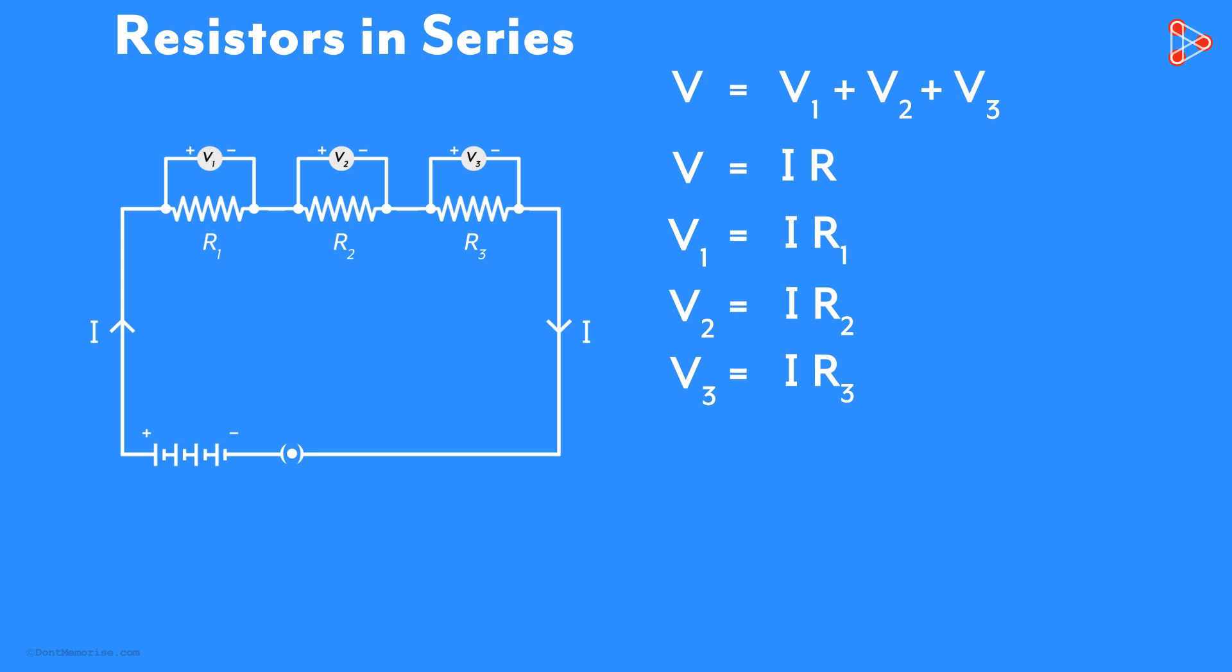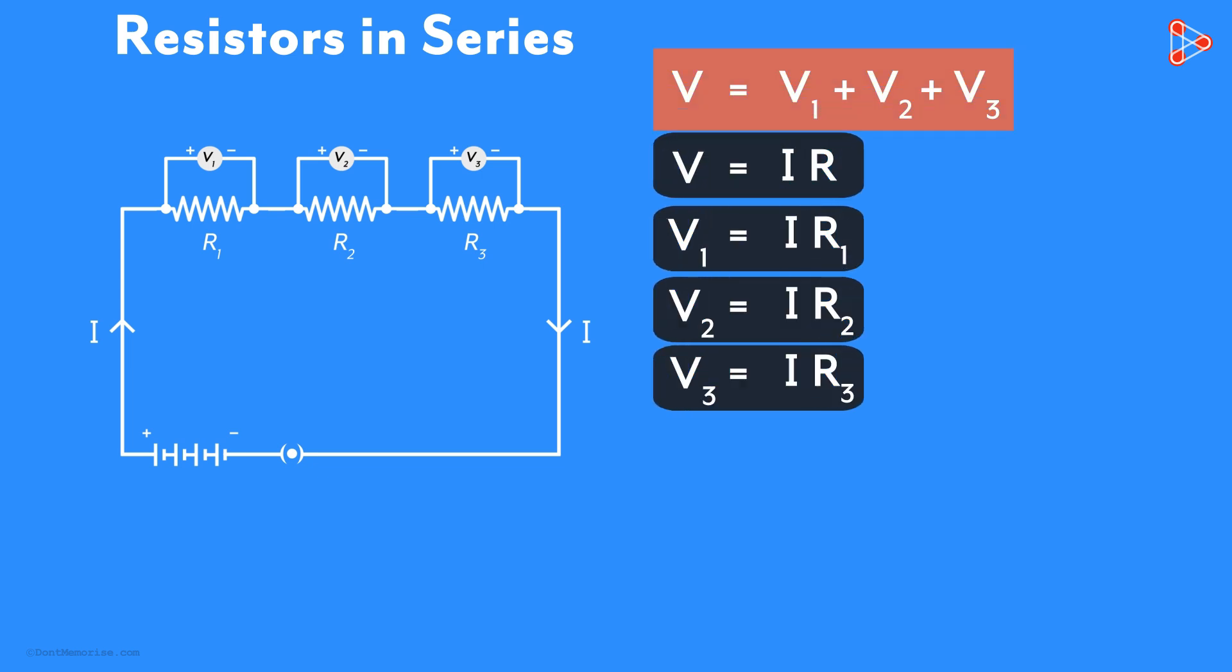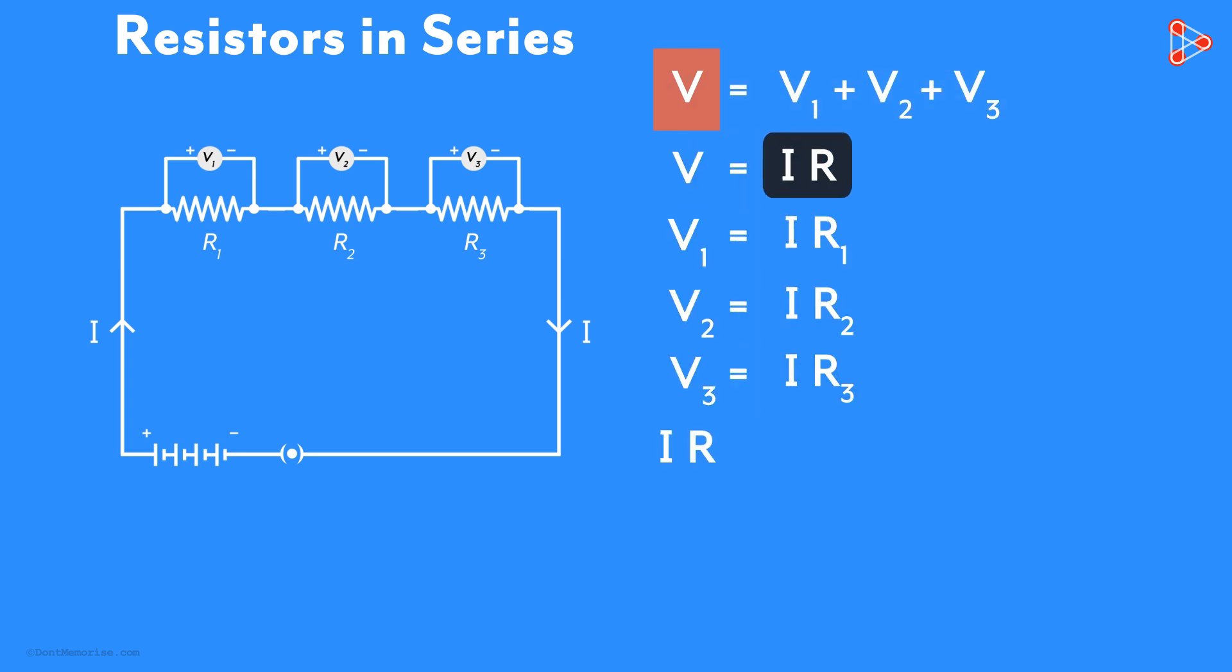Now we can substitute the values of V, V1, V2, V3 in the first equation to get the result we need. V is I times R, V1 is I times R1, V2 is I times R2, and V3 is I times R3.